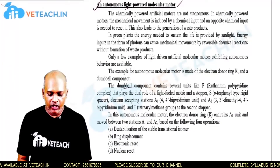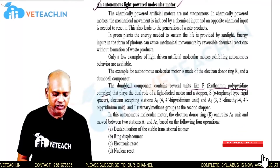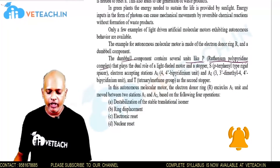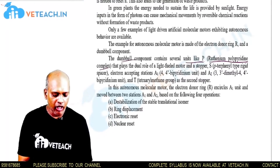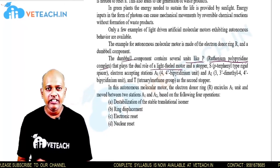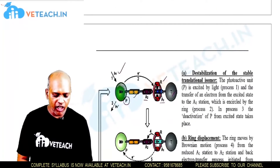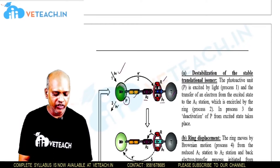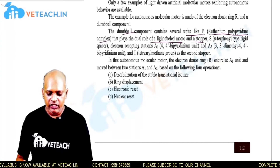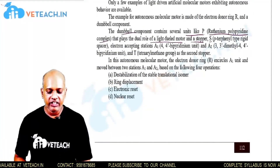The dumbbell component P is a ruthenium polypyridine complex — this is the photoactive stopper. This photoactive stopper acts in a dual role: it is a light-fueled motor and a stopper, because it acts as a stopper between the ring and the three stations, and it is also activated by photo energy.